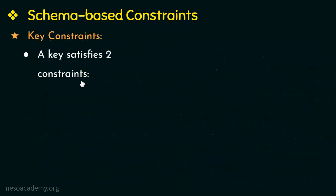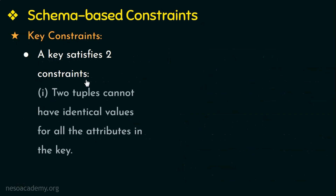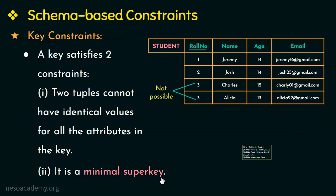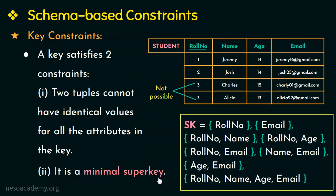A key satisfies two conditions. The first condition is that no two tuples can have identical values for all the attributes in the key. The second condition is that it has to be a minimal super key — that is, the minimum set of attributes needed to identify each tuple uniquely. The first condition applies to both keys and super keys, while the second condition applies only to keys. Therefore roll number or email can be a key in this relation student.